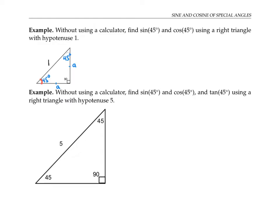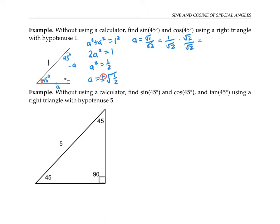The Pythagorean theorem says this side length squared plus that side length squared equals the hypotenuse squared. So we have a squared plus a squared equals one squared. That is two a squared equals one, so a squared is one half, and a is the square root of one half. Since we're talking about the lengths of sides of triangles, I can just use the positive square root. It's customary to rewrite this as one over the square root of two, and then rationalize the denominator by multiplying the top and the bottom by the square root of two, giving the square root of two over two.